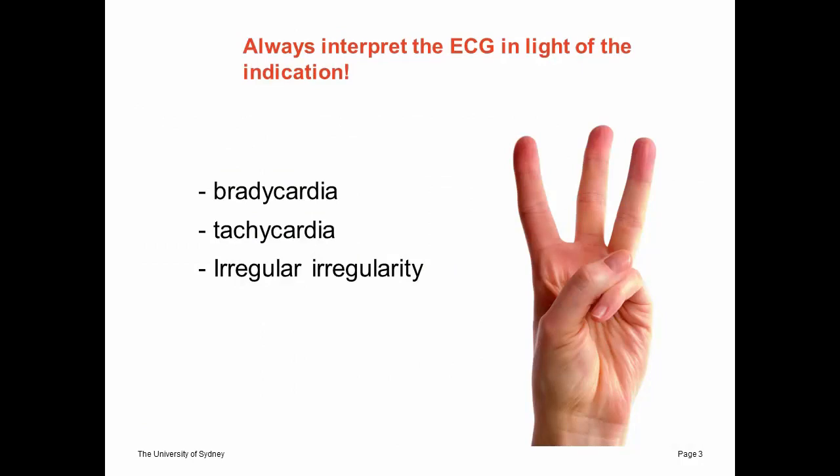It's important to realize that ECGs, like any test, need a good indication to be made. There are basically three indications for heart rhythm study: bradycardia, tachycardia, and irregular irregularity. Bradycardia in a dog means a heart rate less than 60 per minute, or subjectively, if you have a very stressed dog and the heart rate is clearly lower than expected.